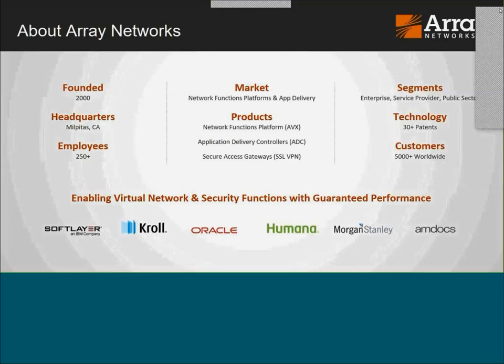Founded in 2000, we're headquartered in Milpitas, California in Silicon Valley. We're a good-sized organization with over 250 employees and a global company with presence in North America, Europe, China, India, Japan, and other ASEAN countries. In terms of the overall market we serve, we're not 100% sure where to categorize the Network Functions Platform, but considering our history, network functions platform and app delivery and security basically defines the space we're in.